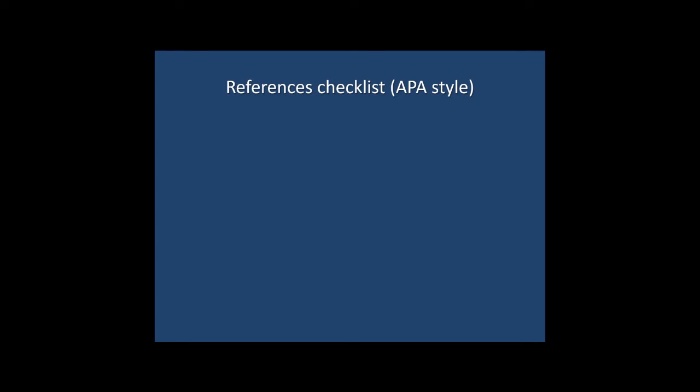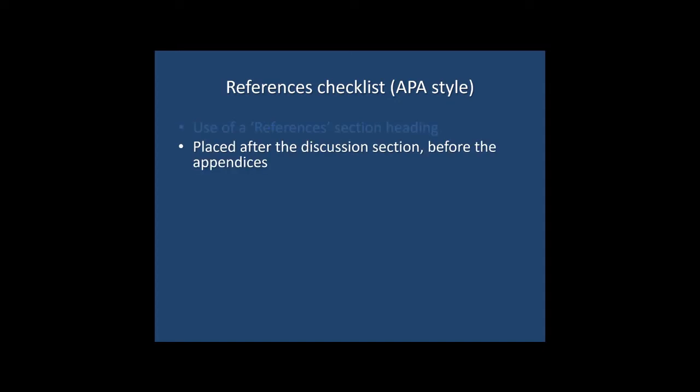First of all, you should make sure that your reference section is clearly delineated via the use of a references section heading. You also need to make sure that your reference list is located in the appropriate place in your lab report, which is after the discussion section but before the appendices.